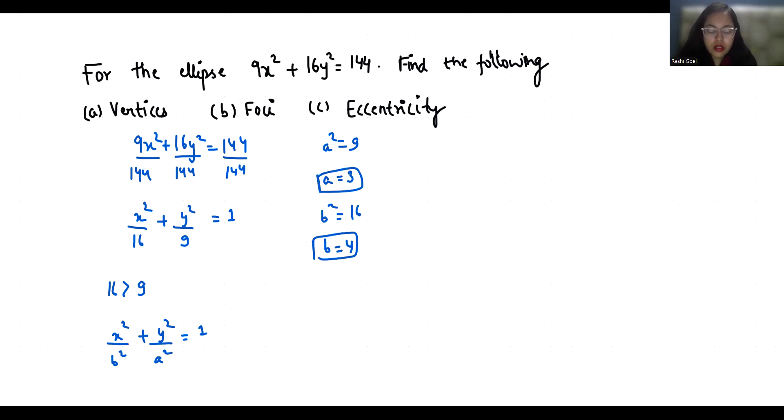Now since the ellipse is oriented horizontally, we calculate h + a comma k, which is 0 + 3 comma 0, so that is (3, 0). This is the right vertex.